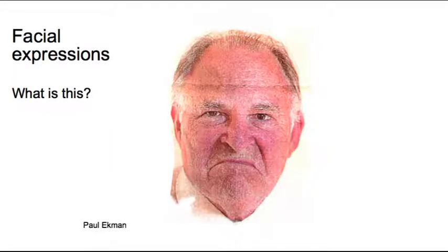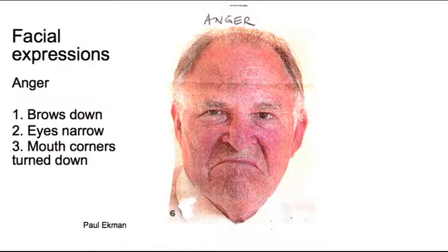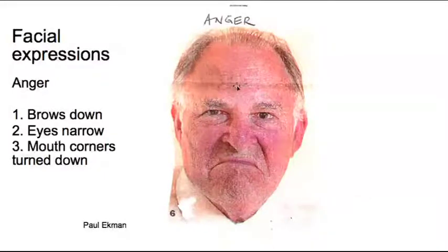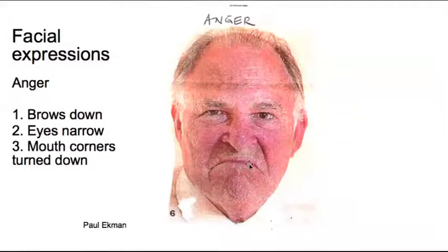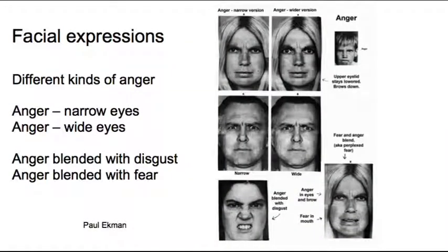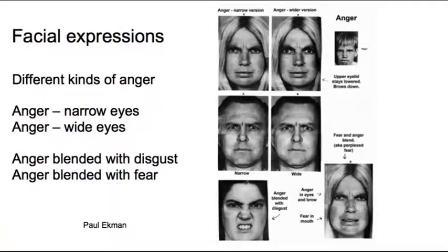This is anger: brows down in the reverse V shape. Remember in sadness the V shape points up; in anger it's reversed. Eyes are narrow, just little slits. Mouth corners turned down. Anger is related to disgust — you can blend the two together. You can see fear blended with anger, and anger blended with disgust: anger in the eyes and disgust in the mouth. Lots and lots of variations.